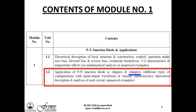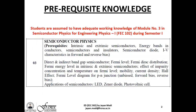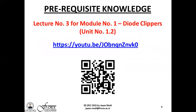The prerequisite knowledge required is a very good understanding of semiconductor physics, which we studied in semester 1 in engineering physics 1. Apart from that, in case you have missed the previous lecture — lecture number 3 for module 1, Diode Clippers, the first half of unit 1.2 — the YouTube video link and QR code are given. Please kindly go through it.